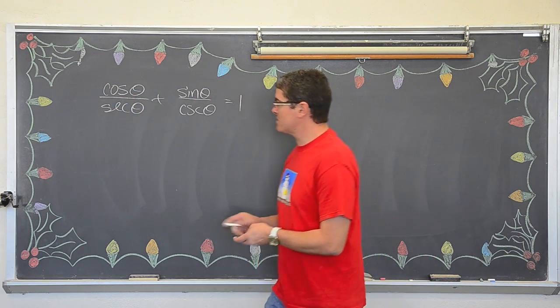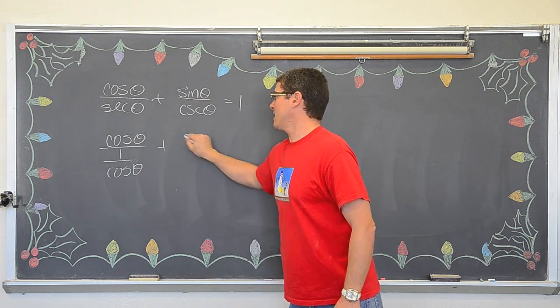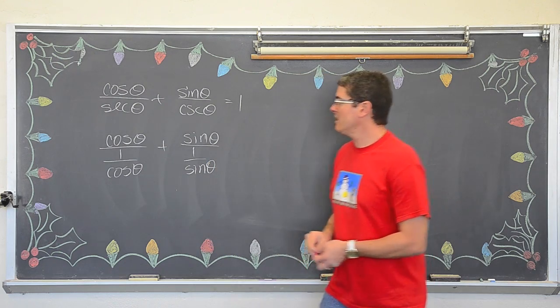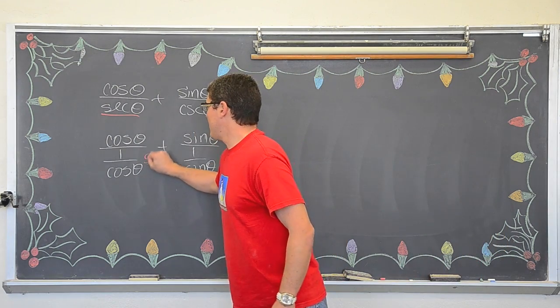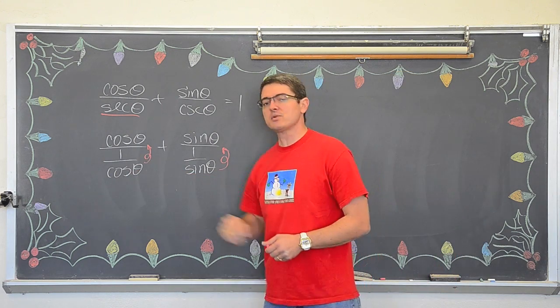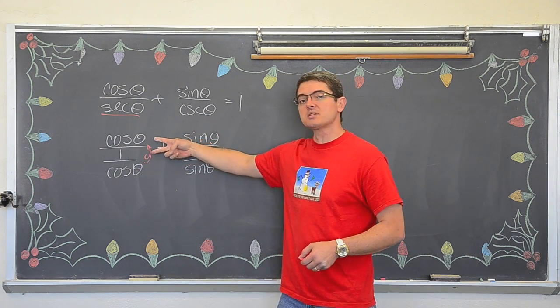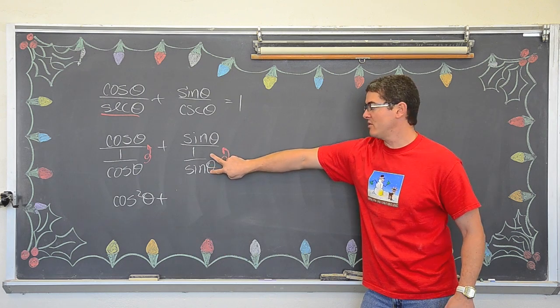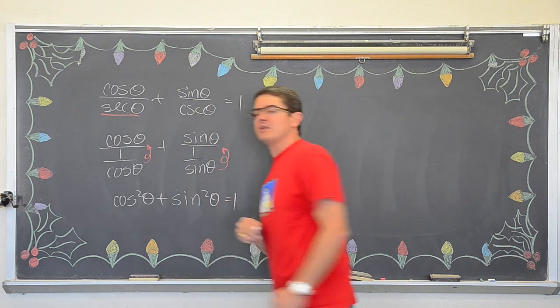Well secant is one over cosine. So cosine theta over one over cosine theta plus sine over one over sine theta. You see what I am doing? I am taking out secant and replacing it with its reciprocal identity. And same thing with cosecant. Now you can take these bottom fractions and flip them up. You know you can't really, there really truly is no division of fractions. You multiply by the reciprocal of the second fraction. Well that is always going to be your denominator. So cosine of theta times, this bottom flips up, cosine of theta times cosine is going to be cosine squared. Plus, again this bottom is going to flip up. You are dividing by a fraction so you multiply by the reciprocal. So sine times sine is sine squared.